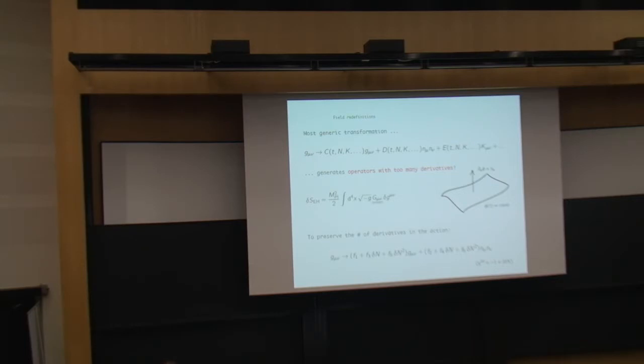However, we can also quickly realize that such a general redefinition will bring us out of the assumption of having at most two derivatives in the action, because we know that there is the Einstein-Hilbert term, and under a redefinition this will change, and we know also from our general relativity courses that its change is given by the Einstein tensor, and this contains already two derivatives acting on the metric. But this tells us that if you want to preserve the number of derivatives, and we want to stop at two derivatives in the action, the redefinition that we can do is kind of limited.